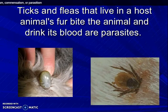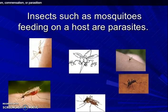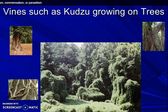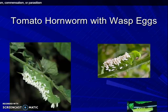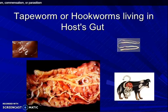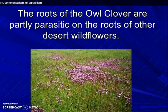Ticks and fleas that live on a host animal, first bite the animal and drink its blood — these are called parasites. Insects such as mosquitoes feeding on a host are parasites. Vines such as kudzu growing on trees, tomato hornworm with wasps, tapeworm or hookworm living in the host gut, and the roots of owl clover are partly parasitic on the roots of other desert wildflowers.